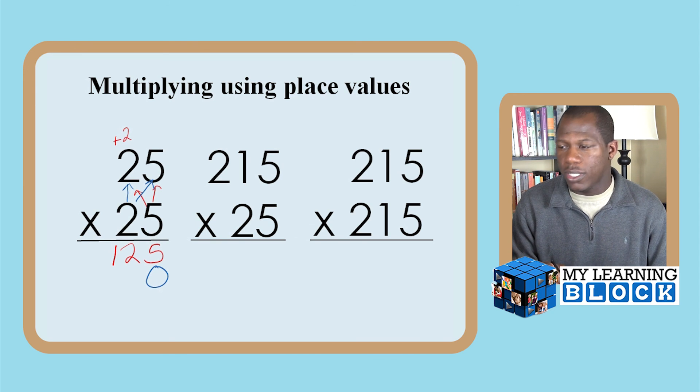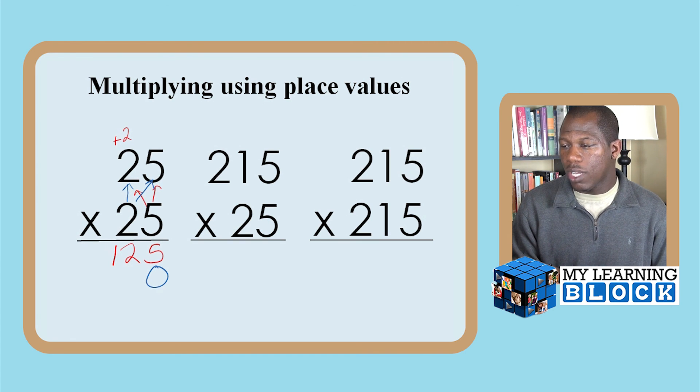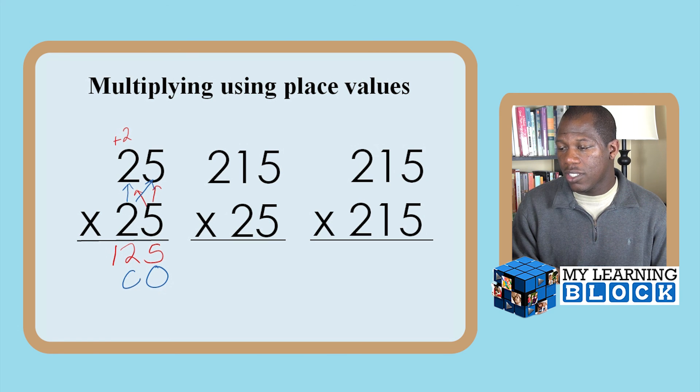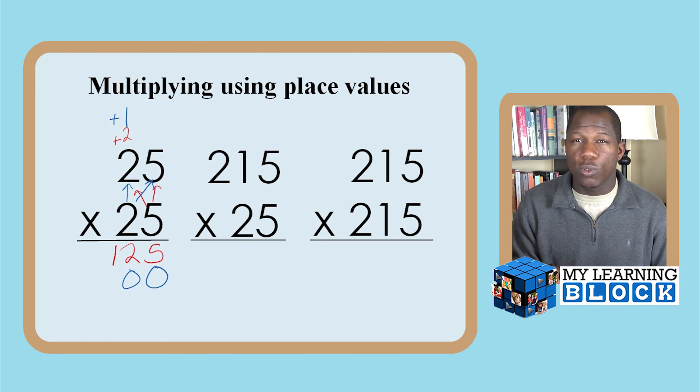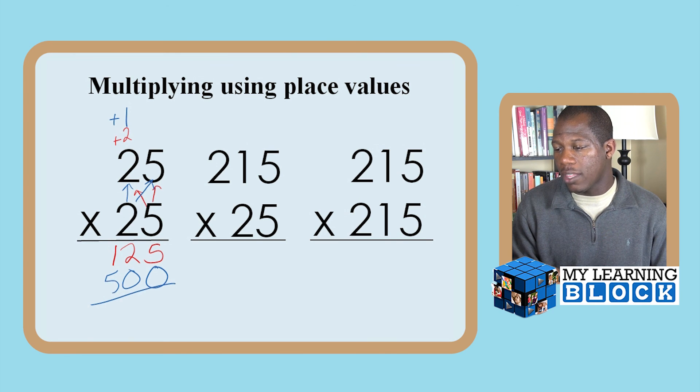So 20 times 5, or in this case 2 times 5 because we've added our 0, 2 times 5 equals 10, 0, carry my 1. 2 times 2 equals 4 plus 1 is 5. Add those together: 5 plus 0 is 5, 2, 625. Yes, 25 squared is 625.